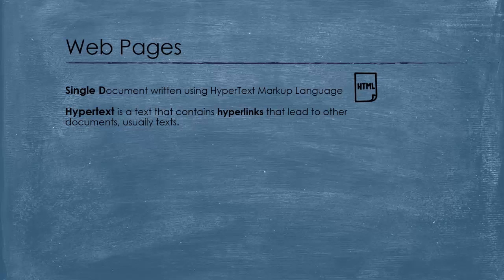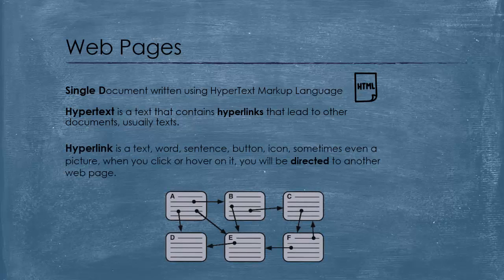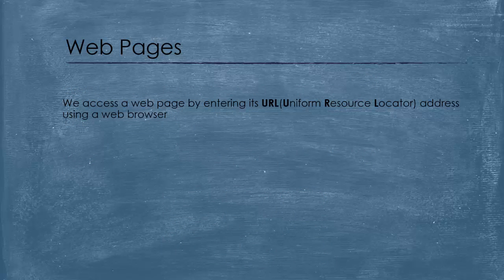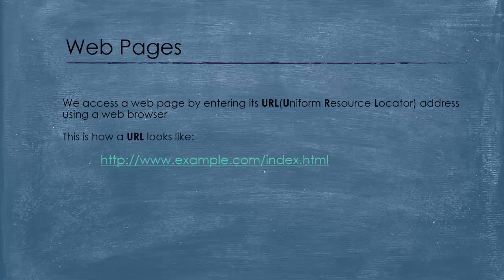A hyperlink simply is a text, word, sentence, button, icon, sometimes even a picture. When you click or hover on it, you will be directed to another web page. We can access the web page by referring to it using a URL — uniform resource locator address — using a web browser. This is how a typical URL looks like.